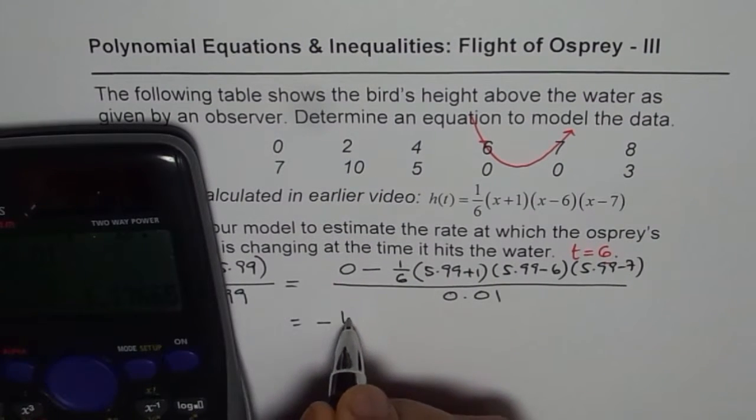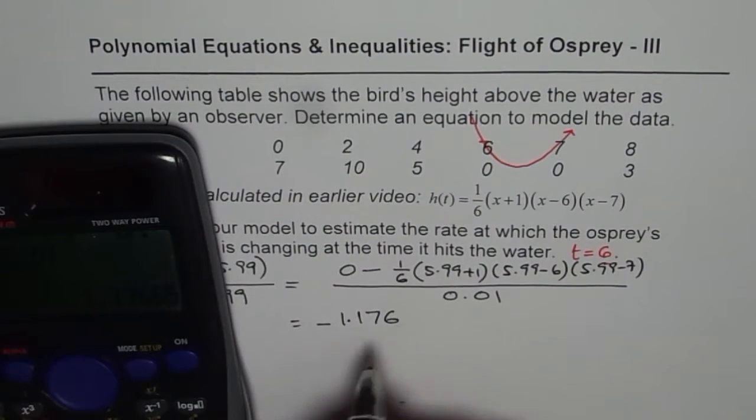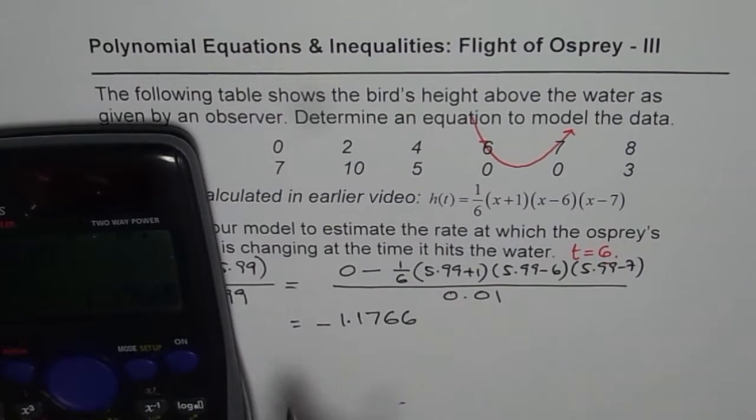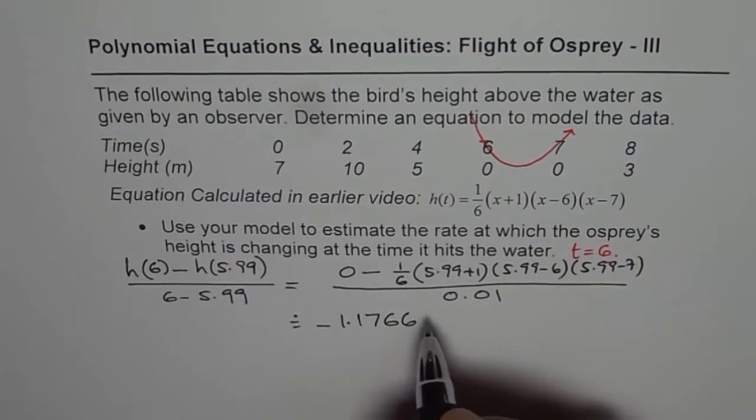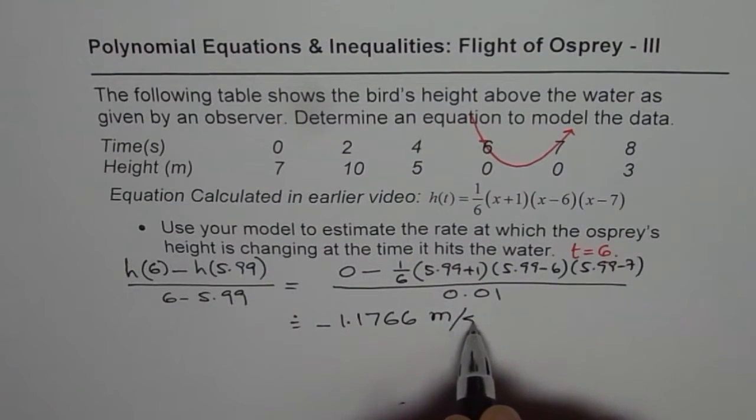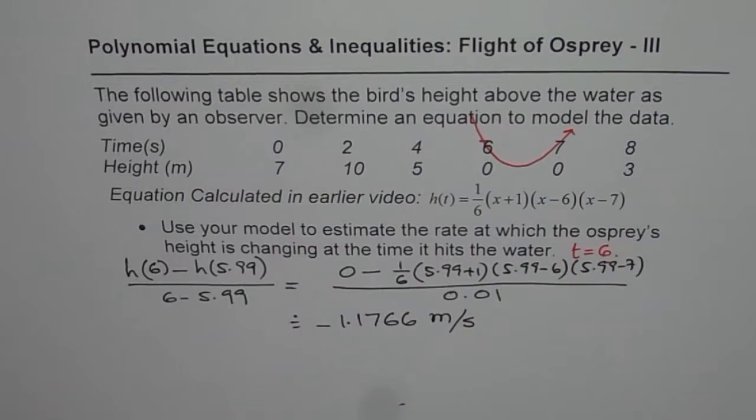which is minus 1.1766, right? So approximately, this is the average rate of change. The height is in meters and time is in seconds. So when you use your model, you get that as your answer.